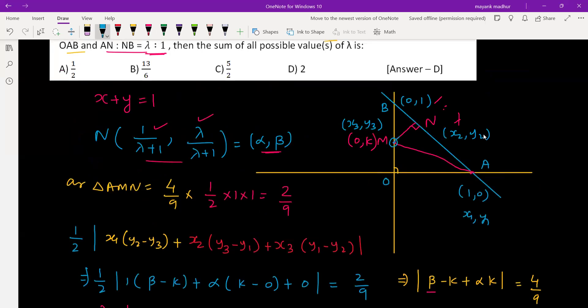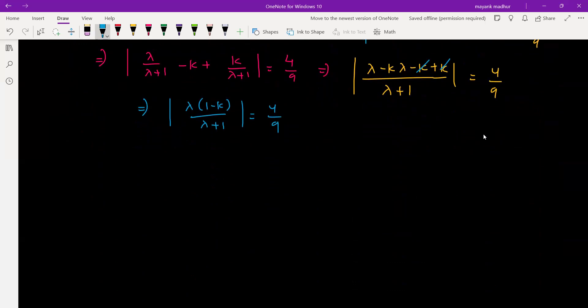Now from this point, we drop a perpendicular on this line x plus y equal to 1. We drop the perpendicular from 0 comma k on x plus y minus 1 equal to 0, and the coordinate is alpha beta.